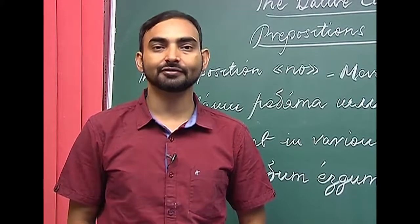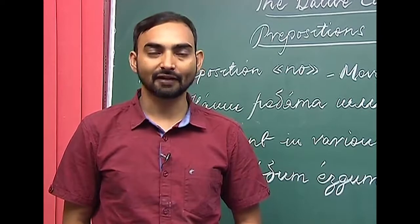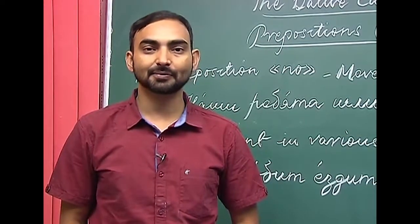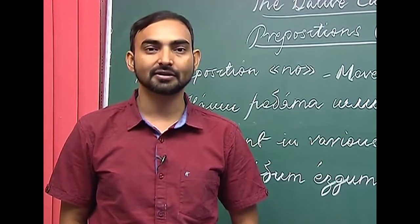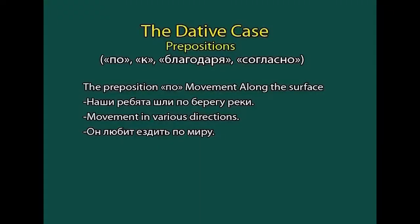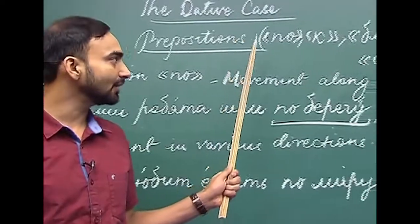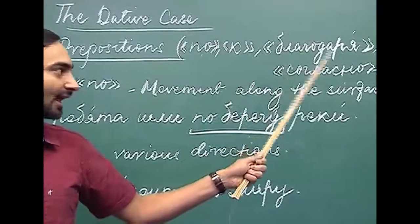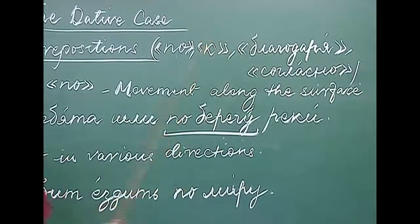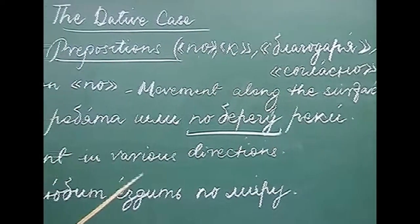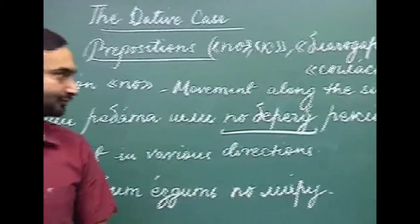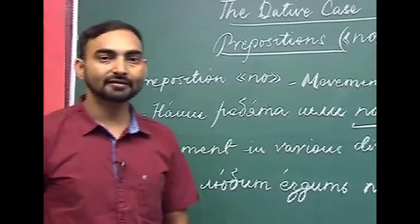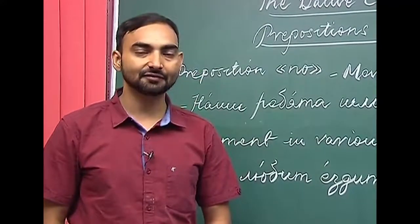While discussing the uses of the dative case, we covered that certain prepositions require the dative case of nouns and pronouns after them. The four prepositions we are going to discuss in this lesson are: po, k, blagodarya, and soglasno. All these prepositions require nouns and pronouns to be in the dative case.